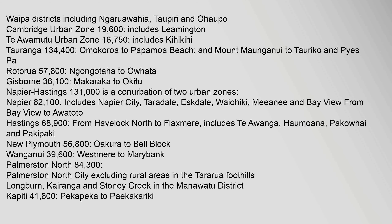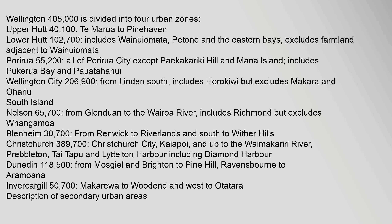Palmerston North 84,300, covering Palmerston North City excluding rural areas in the Tararua foothills, Longburn, Kairanga and Stony Creek in the Manawatu District. Kapiti 41,800, from Paekakariki to Paekākāriki. Wellington 405,000 is divided into four urban zones: Upper Hutt 40,100, from Te Marua to Pinehaven. Lower Hutt 102,700, includes Wainuiomata, Petone and the Eastern Bays. Porirua 55,200, all of Porirua City except Paekākāriki Hill and Mana Island, includes Pukerua Bay and Pauatahanui.